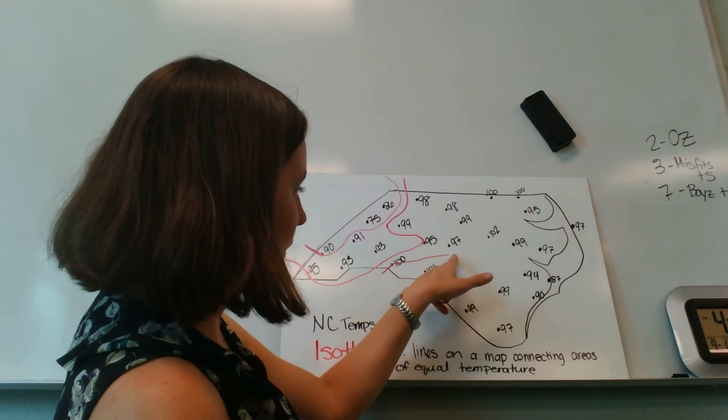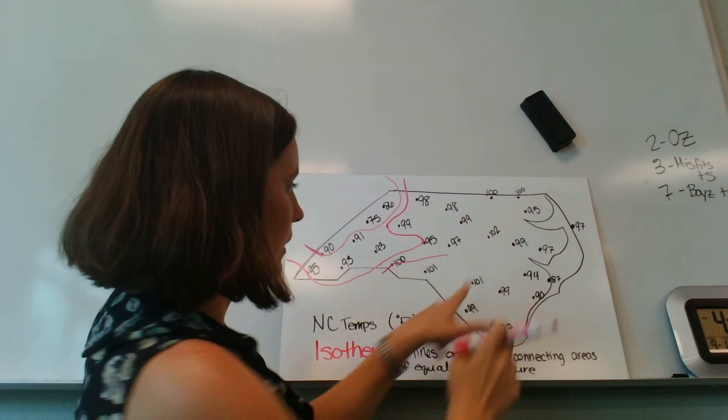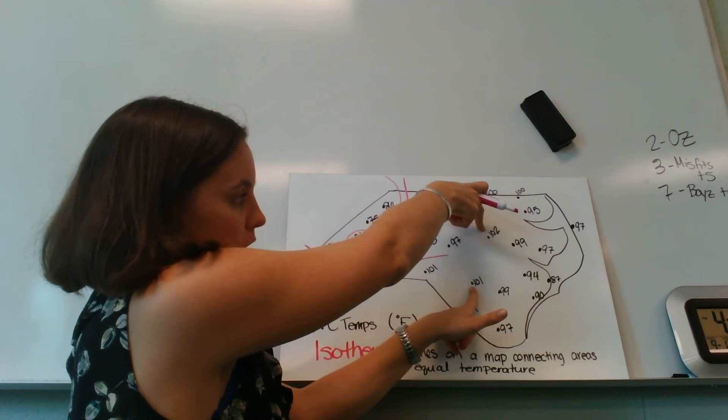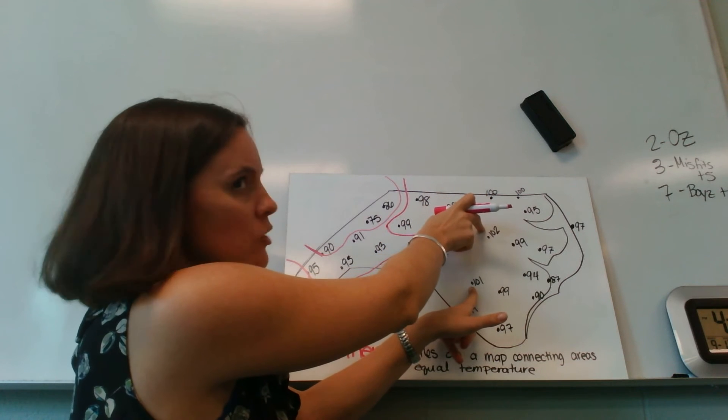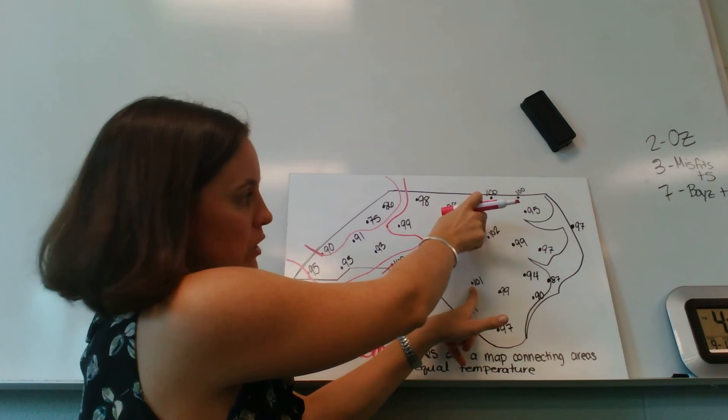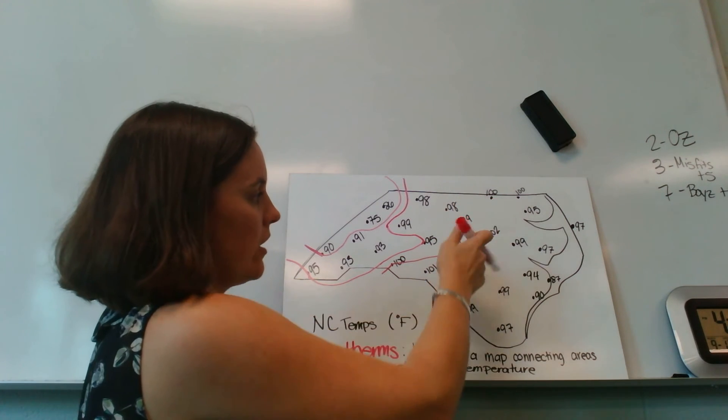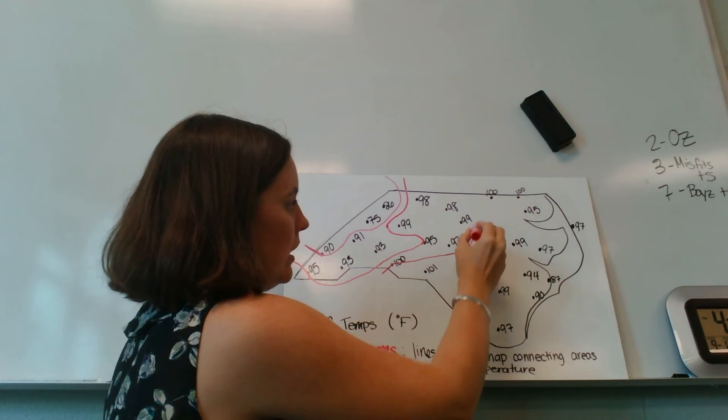And then if I keep going this direction, my line would be in between 101 and 102. 100 is not between 101 and 102. It's less than both of those. So I'm going to steer clear of there.